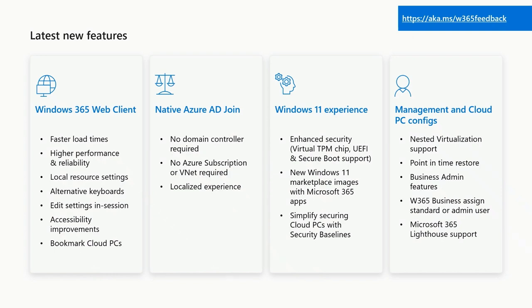Coming soon to GA is our point-in-time restore feature — one of my most exciting new features. This is free; there's no upcharge. We provide 10 restore points to your Windows 365 Cloud PC: four-week rolling restore points and six configurable restore points. This means if at any point a user gets their machine into a bad state, you can roll back 4 hours, 24 hours, 1 week, 2 weeks, 3 weeks, or 4 weeks to ensure they get back to a known good state. The reset feature has also been there since day one, where you can go all the way back to the original provisioned state.